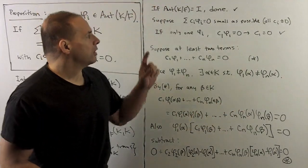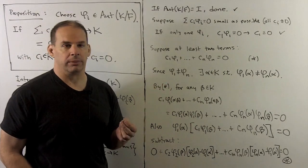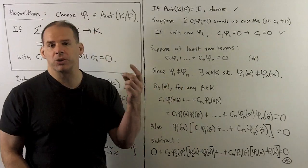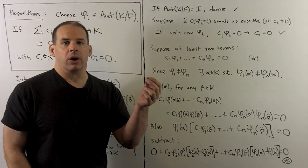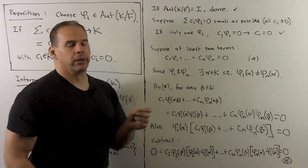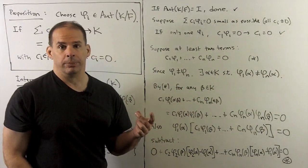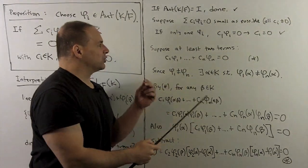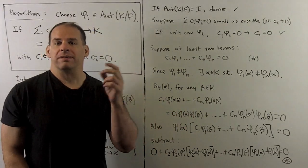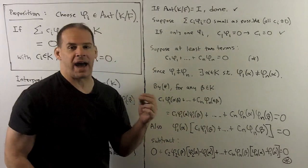For the proof: if our automorphism group has only one element, we're done. So assume it has more than one element. We pretend our linear combination is given as a relation that is as small as possible, so all the coefficients are non-zero. If we have only one φᵢ in the sum, then c₁φᵢ = 0 implies c₁ = 0, and that's our result. Now we assume the linear combination has at least two terms with all coefficients non-zero. Because φ₁ and φₙ are distinct automorphisms, there exists some element α in K such that φ₁(α) ≠ φₙ(α).